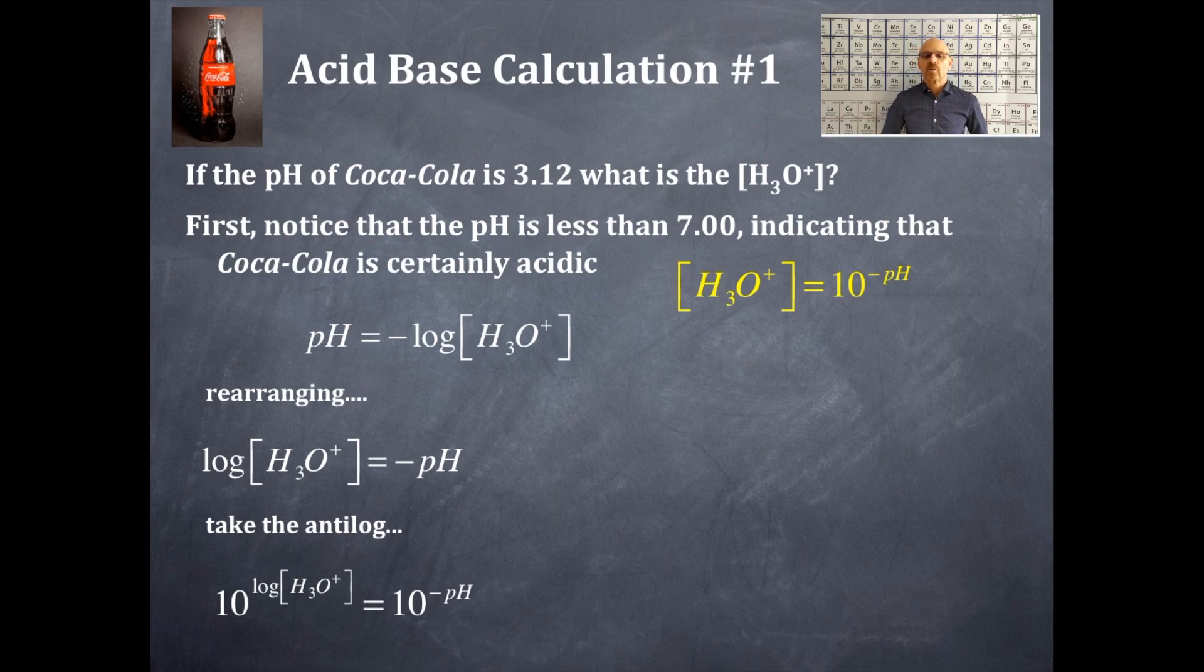Okay. So we want to get the hydronium ion concentration. We have the pH. That yellow equation is what we're going to do. So we're going to plug right into that yellow equation there. The pH is equal to 3.12. So hydronium ion concentration is equal to 10 to the negative 3.12.